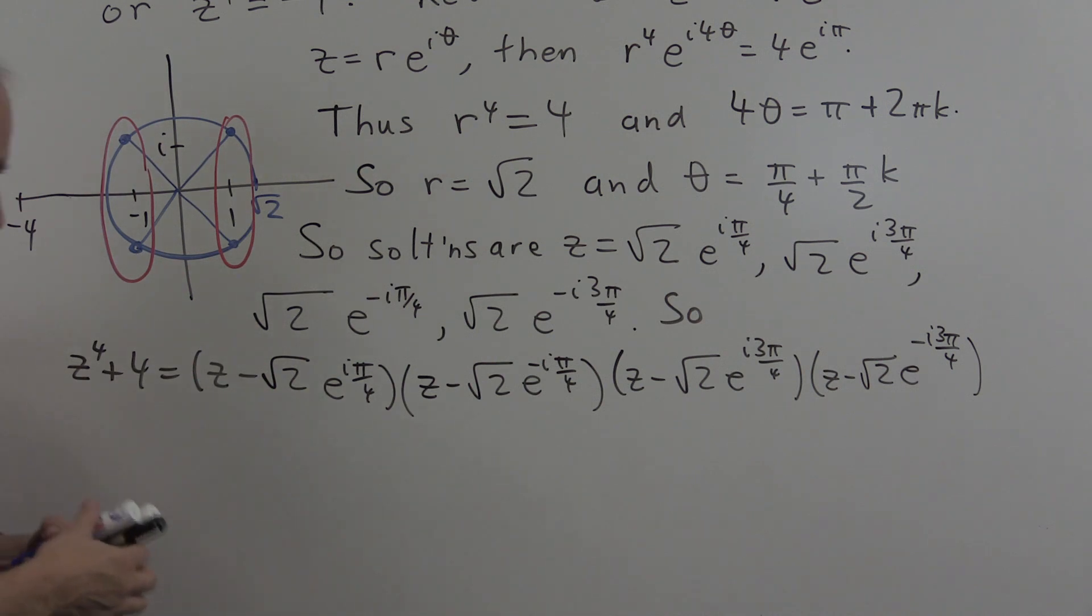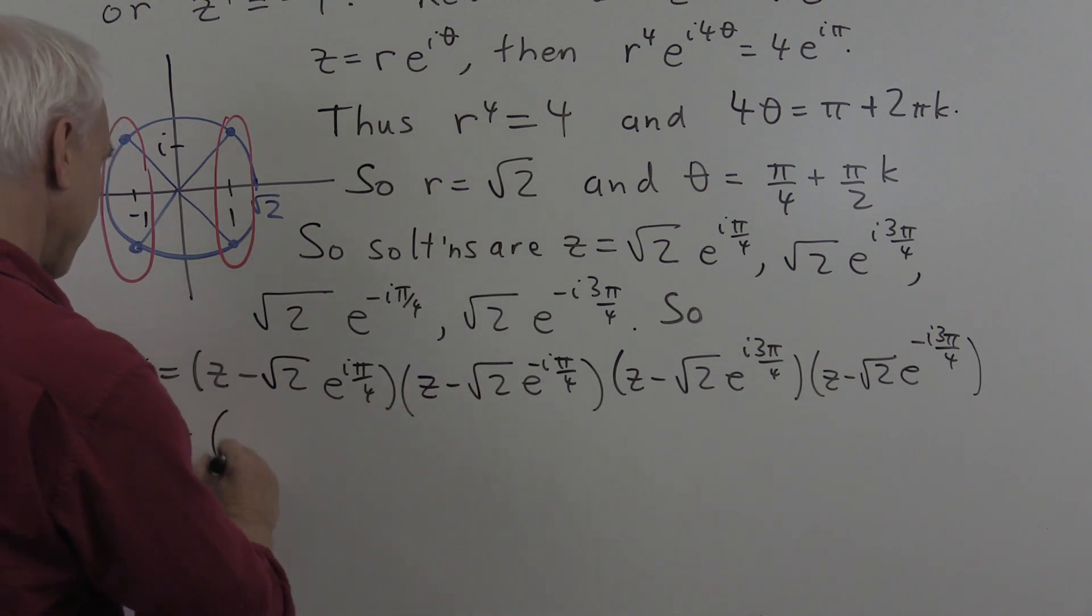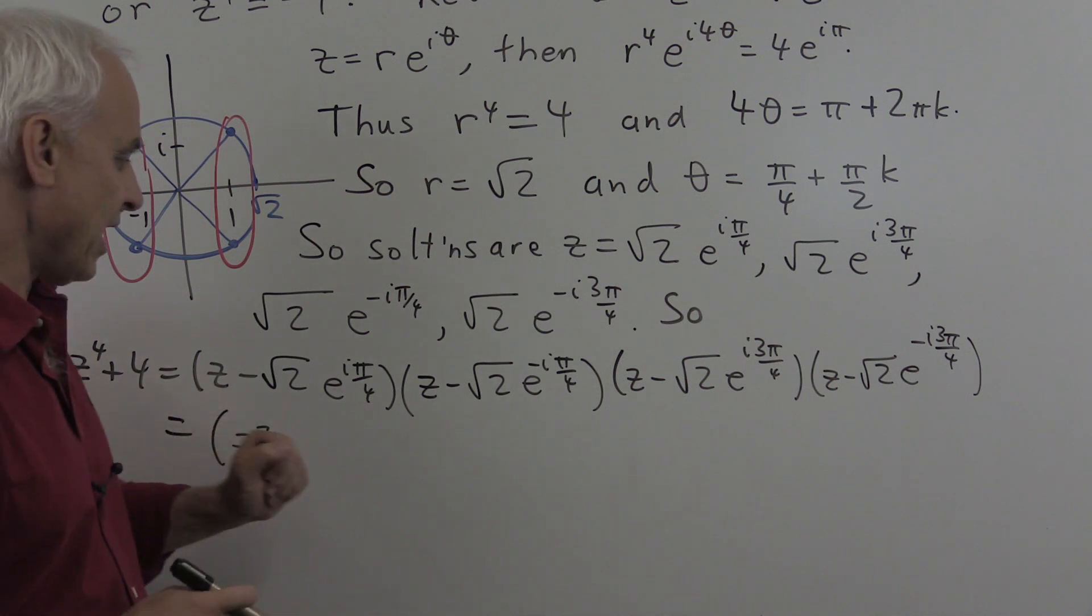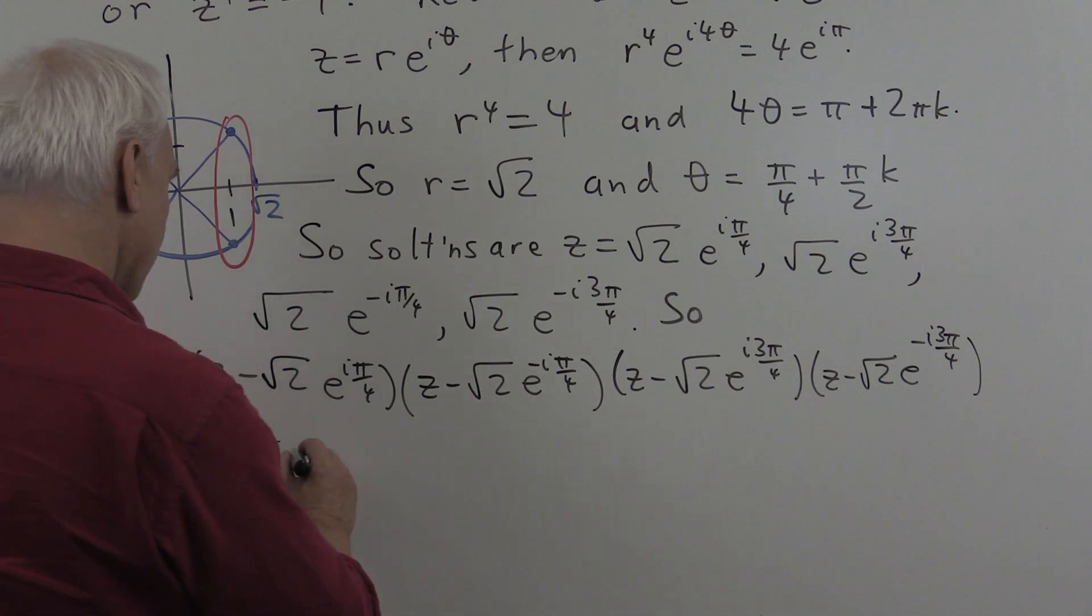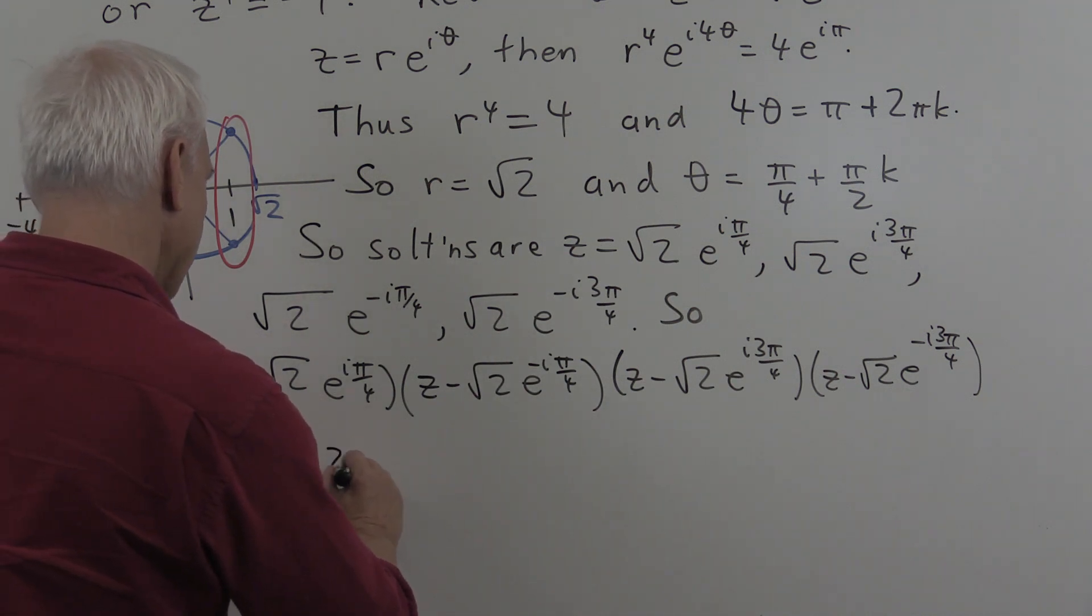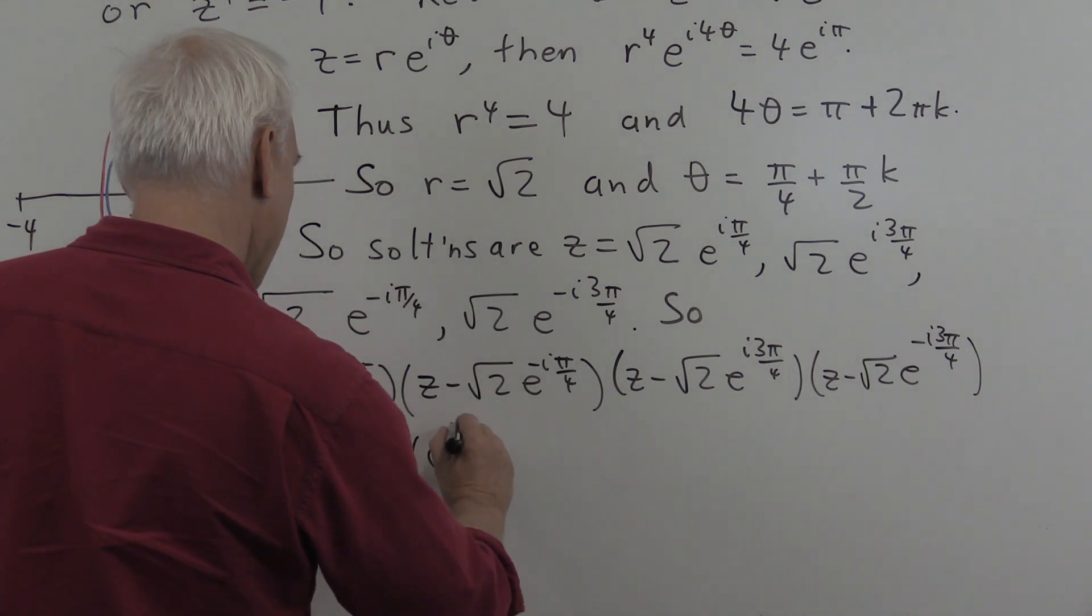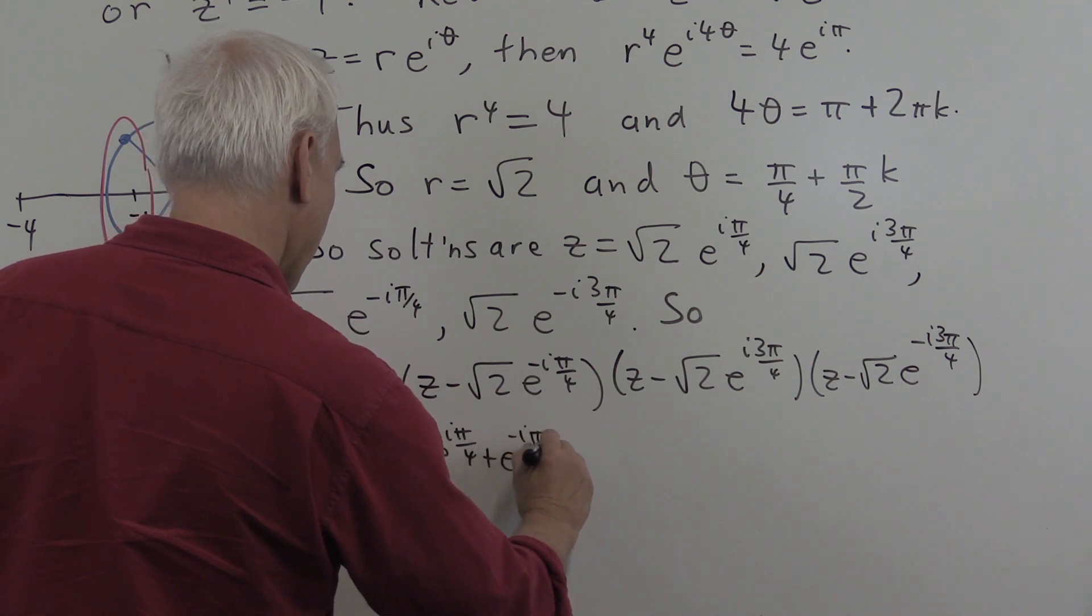Let's illustrate that here in this case. So what happens when we multiply these two together? Well, we get z squared, obviously. And what is the coefficient of z? Well, we have z times this expression and z times this expression. So we get minus z times square root of 2 times e to the i pi on 4 plus e to the minus i pi on 4.